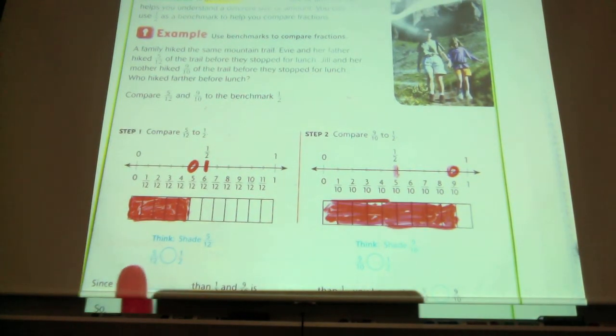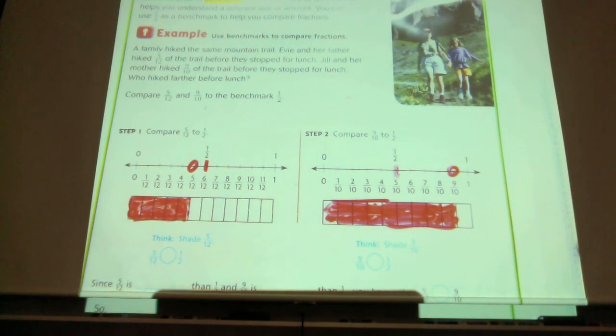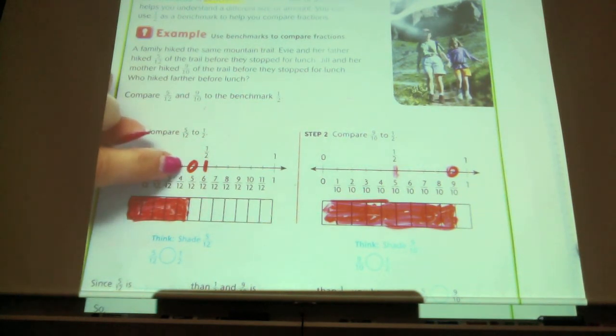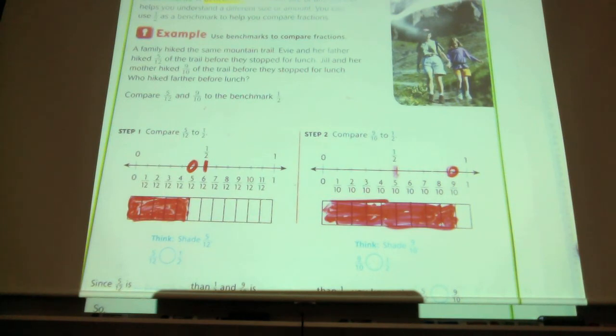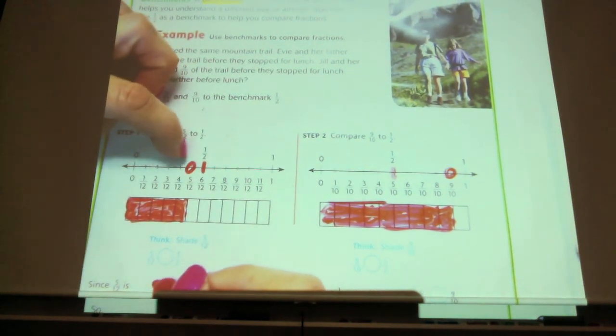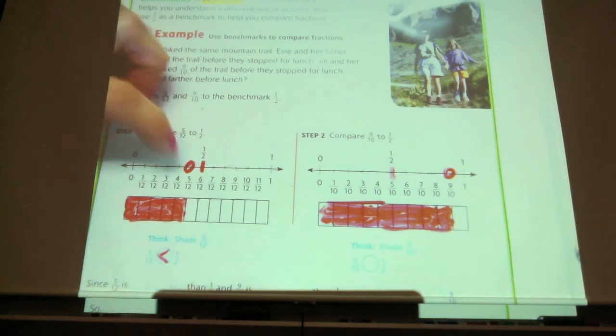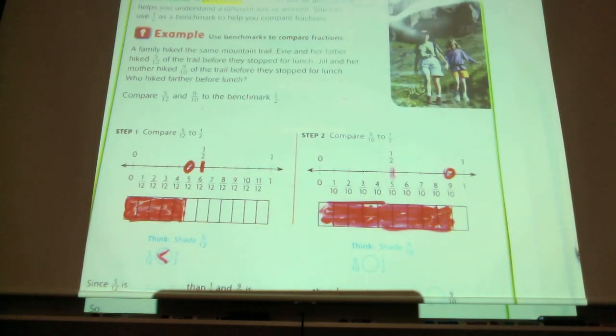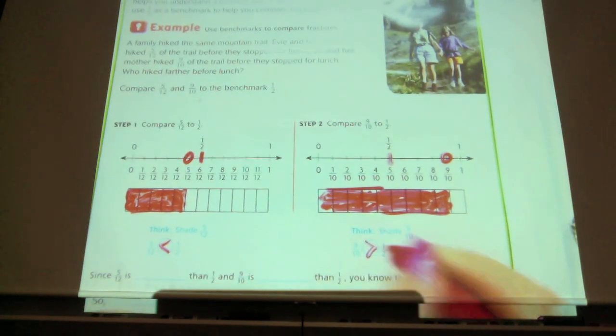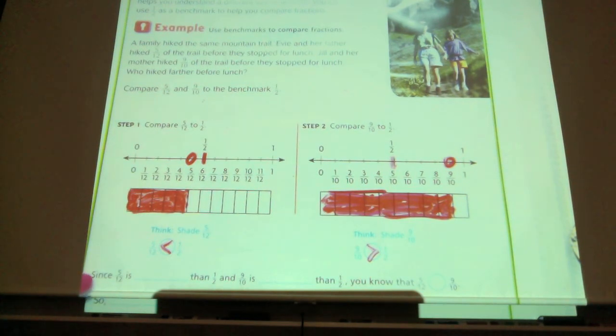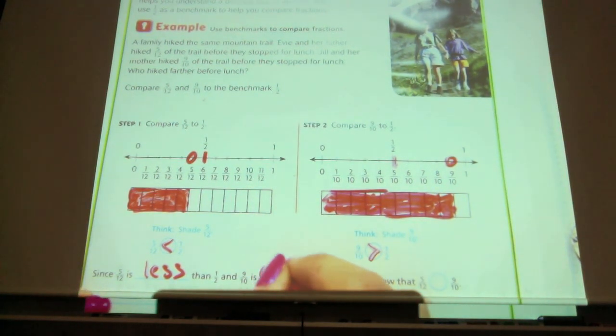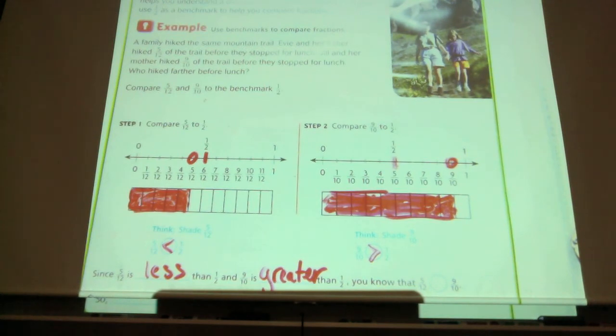Now let's look at the first one again. Thinking in terms of comparing it to one-half, was five-twelfths greater or less than one-half? Look at the model here. Here's where it was. Is it greater or less than one-half? It's less than one-half. It's on this side. That means it's smaller than one-half. Comparing nine-tenths to one-half. Is nine-tenths greater or less than one-half? It's greater than one-half. Since five-twelfths is less than one-half, and nine-tenths is greater than one-half, can we compare five-twelfths and nine-tenths?